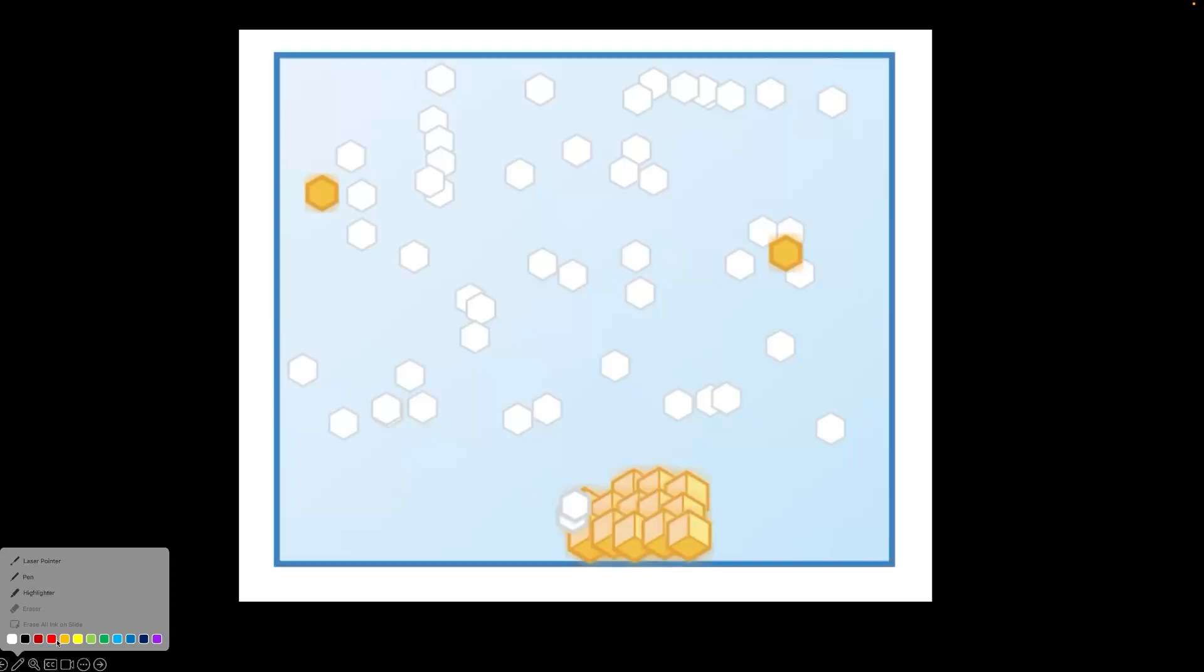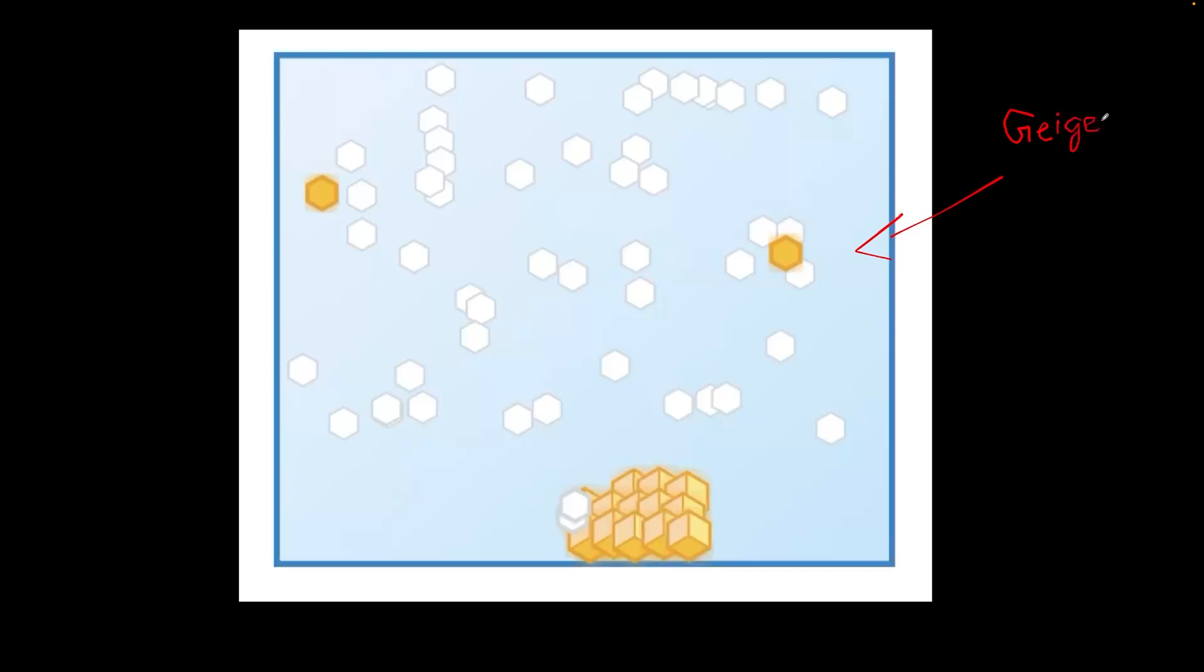But in real life, what actually happens is, we use something known as a Geiger counter. It's spelled G-E-I-G-E-R. It's named after a scientist called Geiger who figured this out. A Geiger counter helps you count the number of radioactive particles by a scientific method, which we don't have to go into right now. But you can actually figure out how much radioactive substance is inside the solution and how much is not inside.